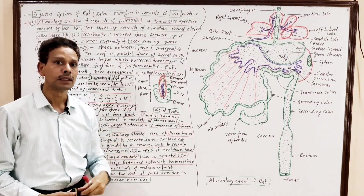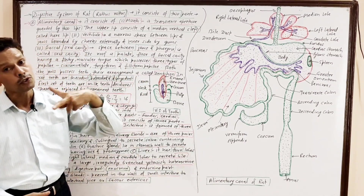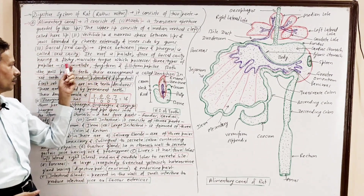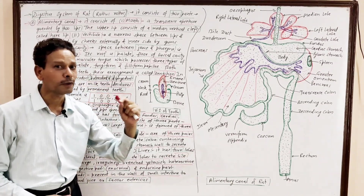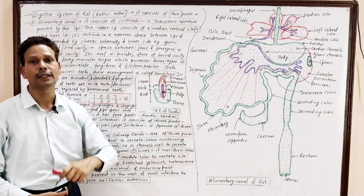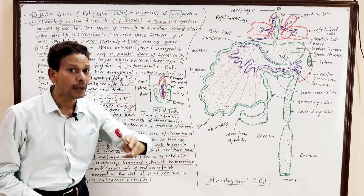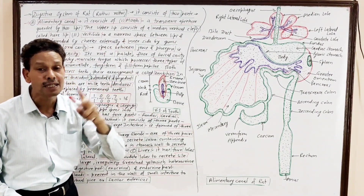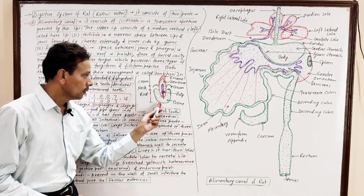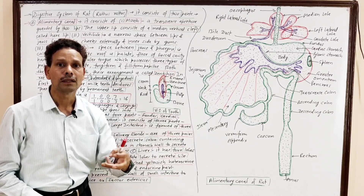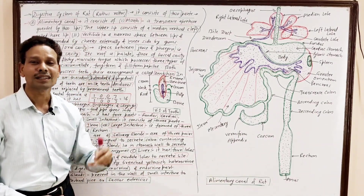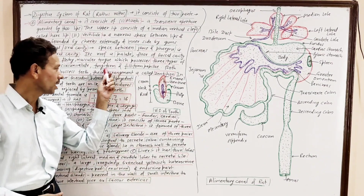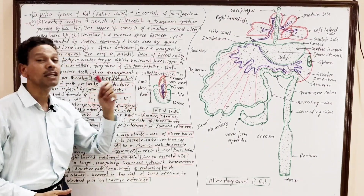In both jaws, teeth are present. In case of RAT, teeth are thecodont — note down, very important for all competitive exams. Thecodont means a tooth is embedded in a bony socket. These teeth are also heterodont, meaning all teeth are not alike but of different types. They are also diphyodont.